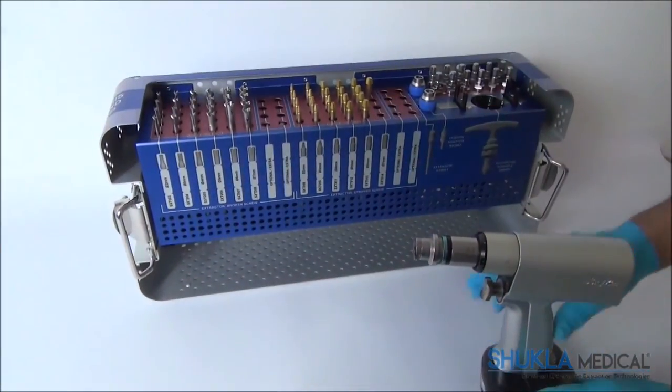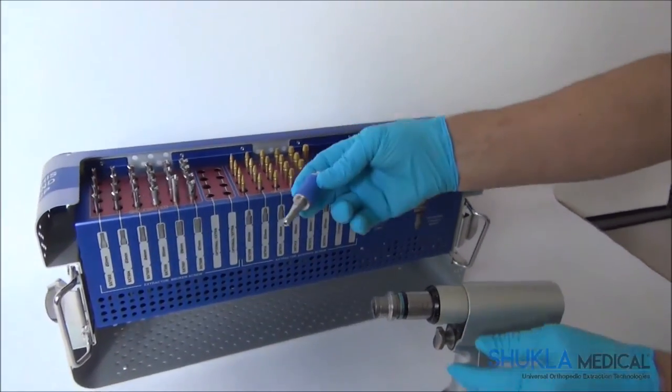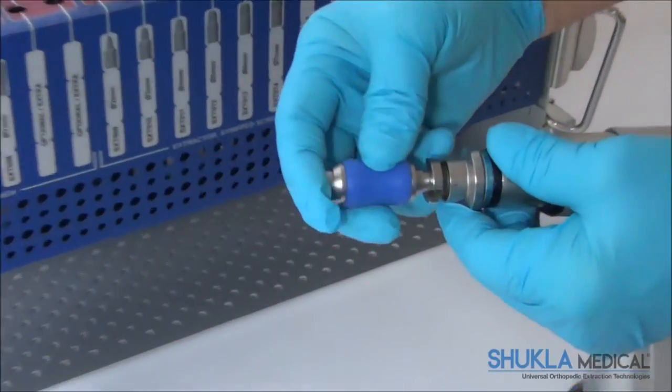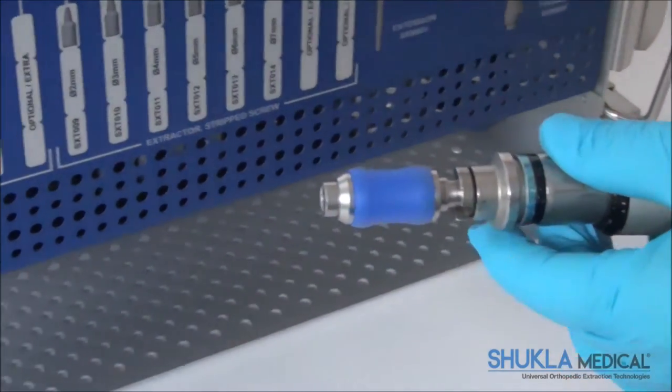The broken screw extractors may be used under power, utilizing the Hudson Extractor Interface, or by hand, utilizing the T-Handle.